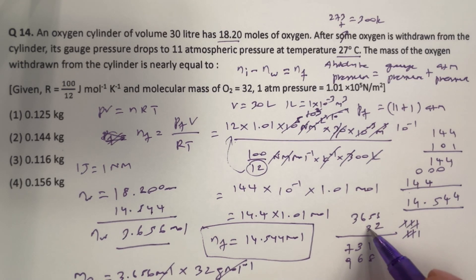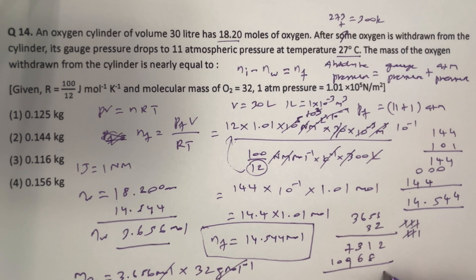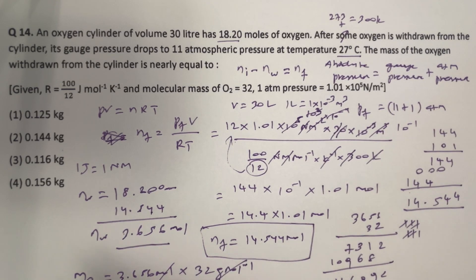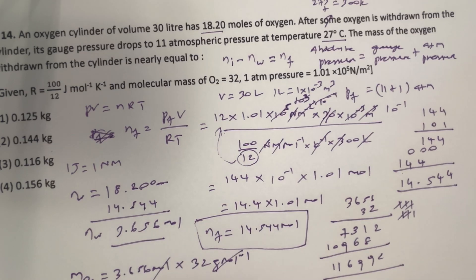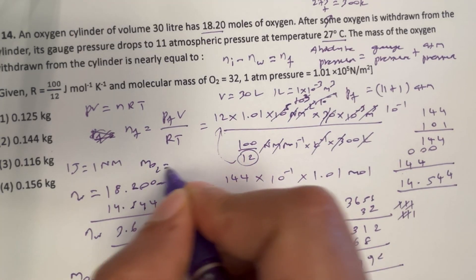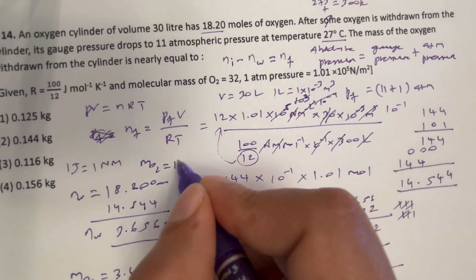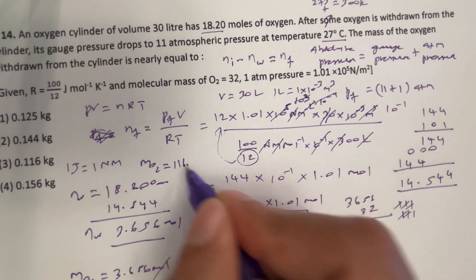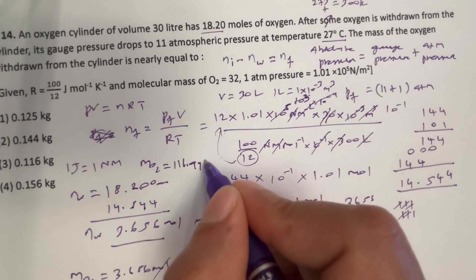Continuing: 9 carry 1; 3 times 3 is 9 plus 1 is 10. Combining all digits gives 116.992. This means we have the result in grams. Therefore, mass of O2 withdrawn equals 116.992 grams.